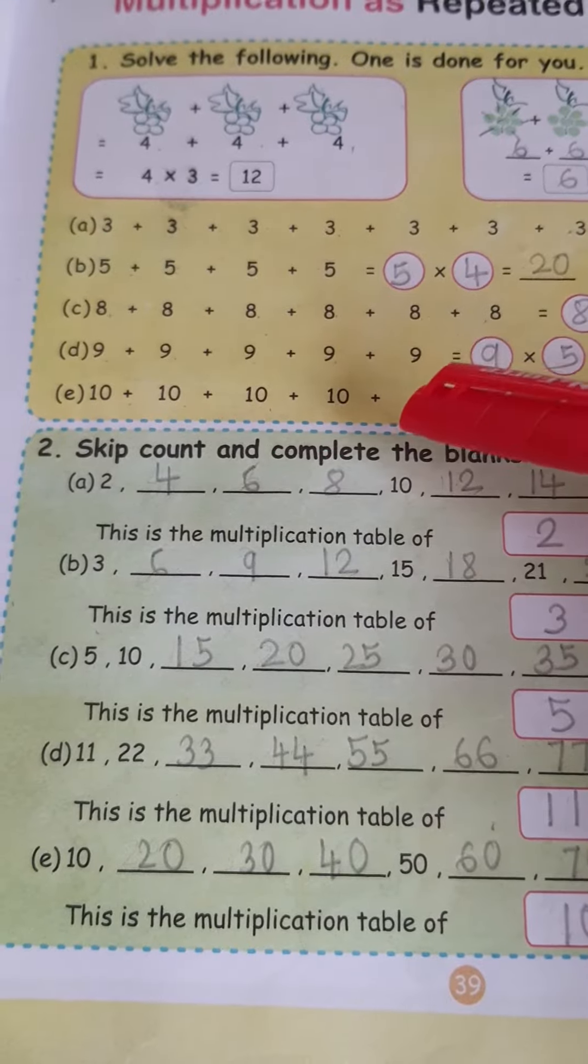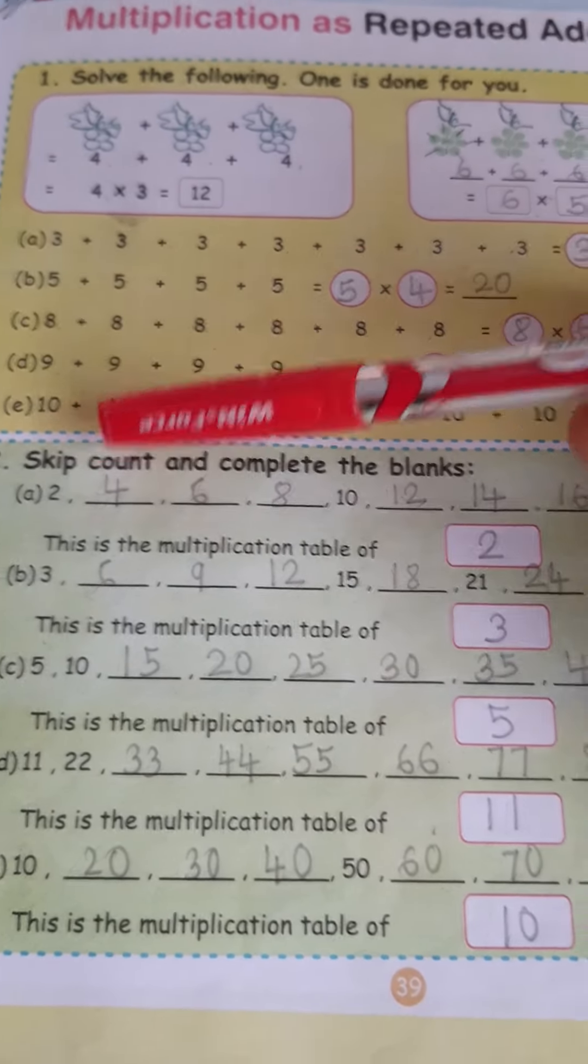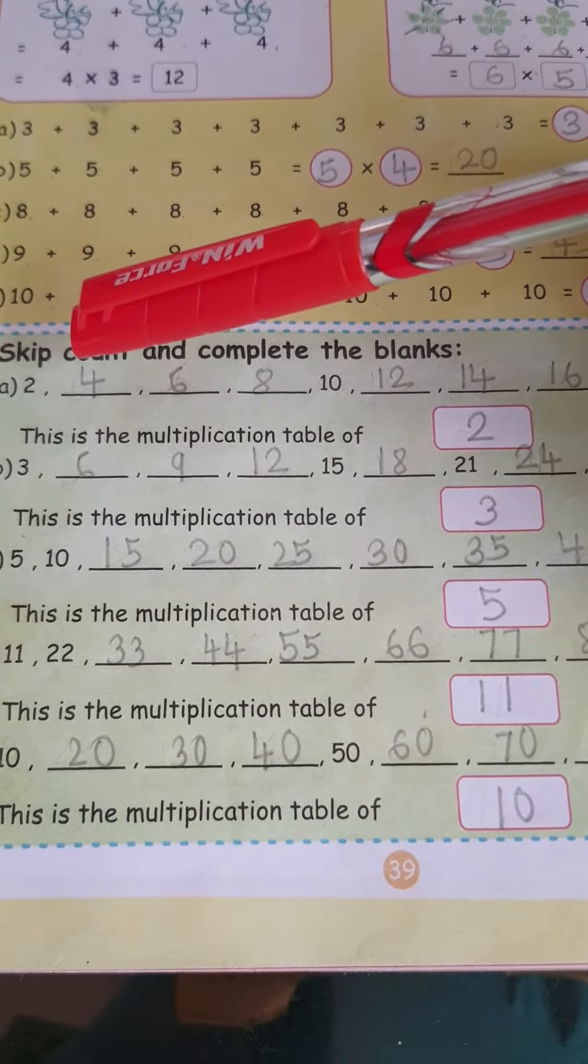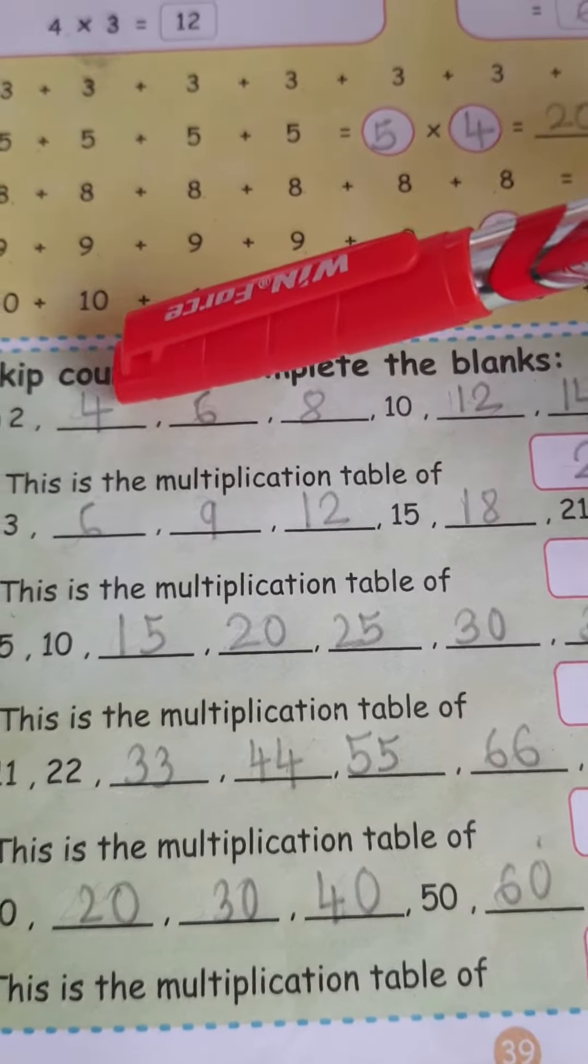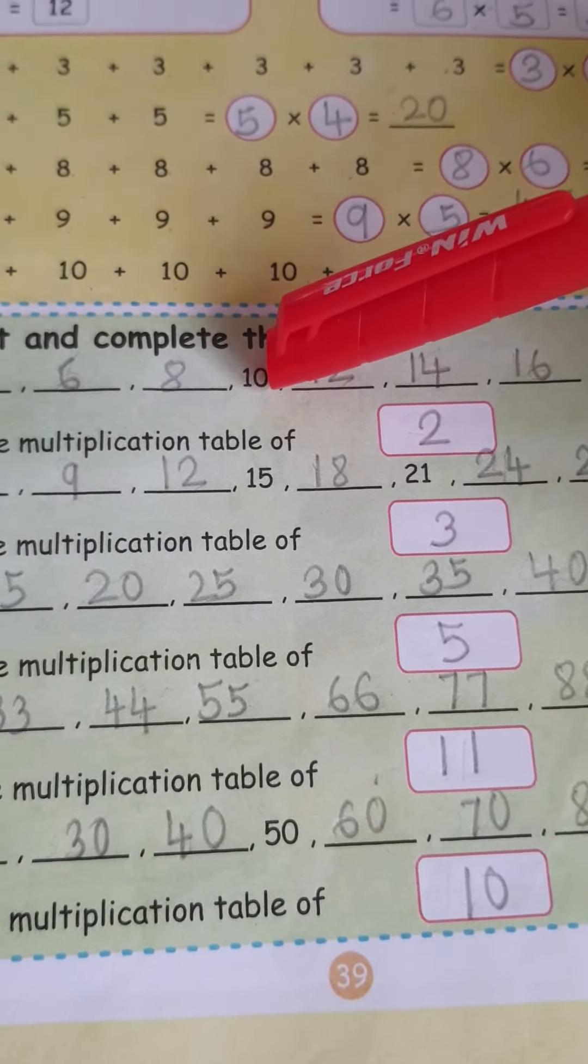Next one, skip count and complete the blanks. See, 10 is here. So, you have to read out the table of 2. 2 1s are 2 already written. 2 2s are 4. 2 3s are 6. 2 4s are 8. 2 5s are 10 already written.